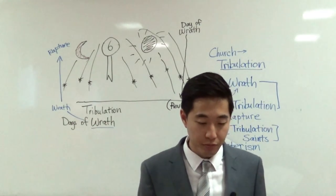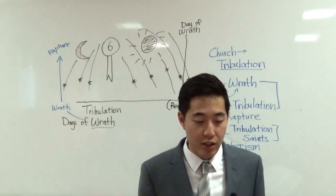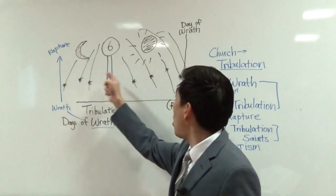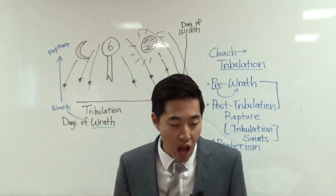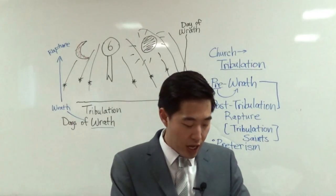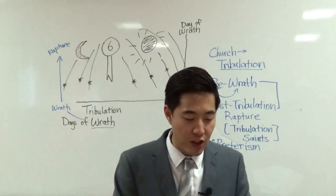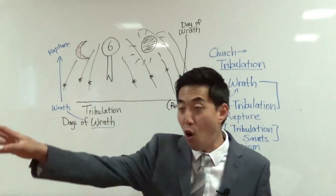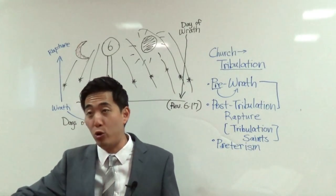Now let's go to Revelation 7. And after these things, so after John saw those six seals, I saw four angels standing on the four corners of the earth. So John sees four angels standing on four corners of the earth.